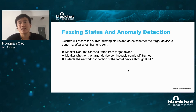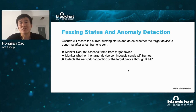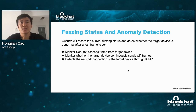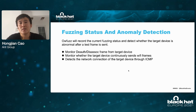Ofos detects whether the target device is abnormal in three ways. One is to monitor whether the target has sent a deauthentication frame — if sent, it means the target device's Wi-Fi connection is abnormally disconnected. Two is to monitor whether the target device continuously sends frames to determine whether the target Wi-Fi module system is abnormal. Three is to detect whether the network connection of the target device is abnormal through ICMP. Using a combination of these three methods, Ofos can detect abnormalities, though there will be some false positives that need to be verified by manual reproduction.